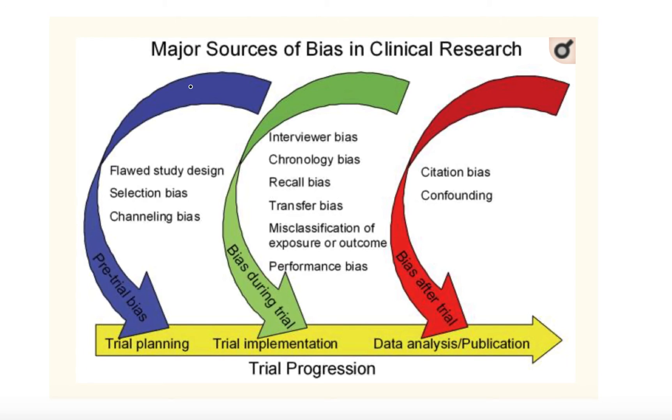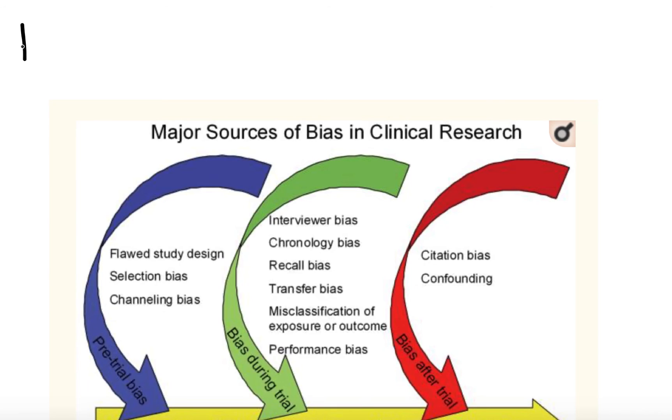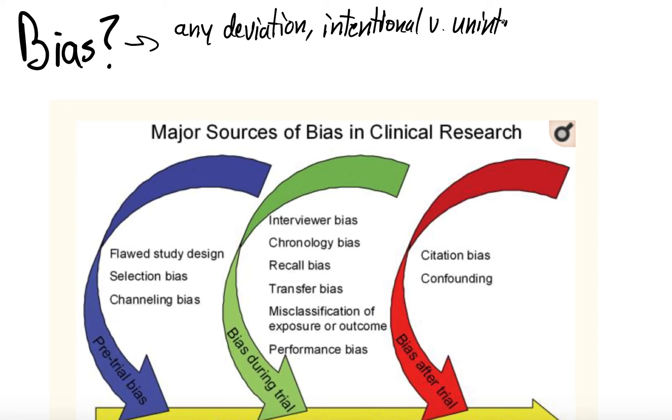So what is bias? Let's just write it out. Bias is any deviation, whether intentional or unintentional from the truth. And the truth is kind of the pure way of understanding the truth, not the truth that you can discover, but the real accurate truth of the matter.